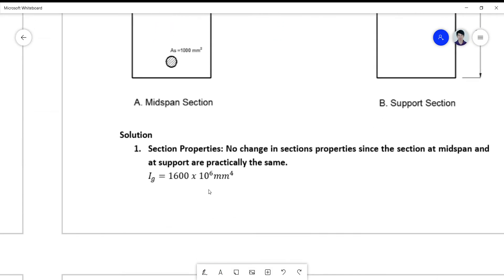So solution: the section properties do not change because the dimensions are just the same and the area of the steel are just the same. The only difference is that the midspan diagrams are basically the opposite of the diagrams on the support in terms of the location of the reinforcement.